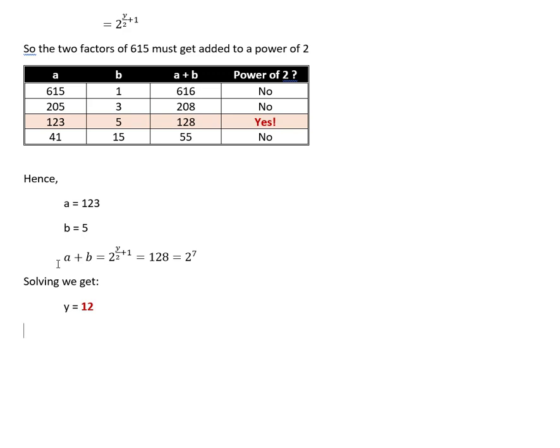And then we can use a minus b which will give us 2x, and then we can calculate x as a minus b upon 2. So 123 minus 5 by 2 is 59. So that's our solution: y is equal to 12 and x is equal to 59.